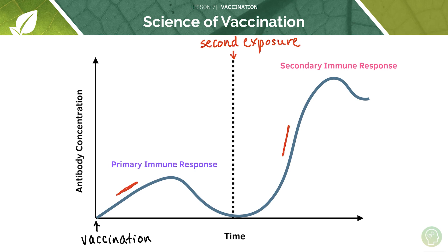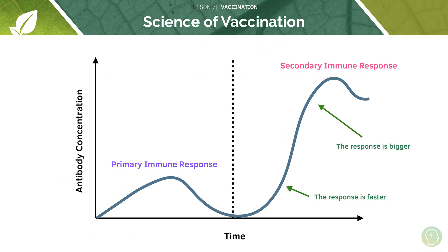Look at how steep the secondary response curve is compared to the primary, and also look at the much higher level of antibody concentration reached. Far more antibody is produced in the secondary immune response. This diagram is something you could reproduce in the exam — draw out this graph and annotate it rather than writing everything out.